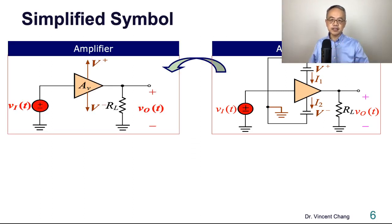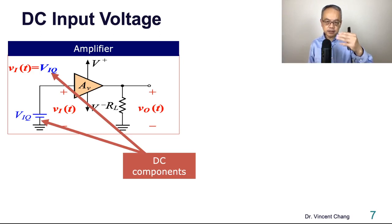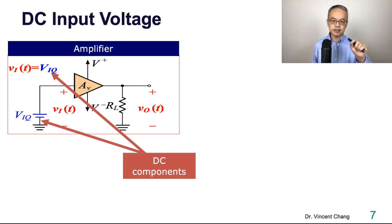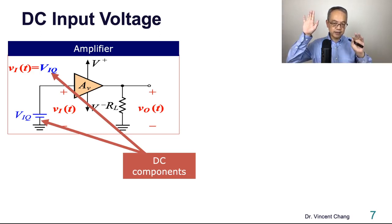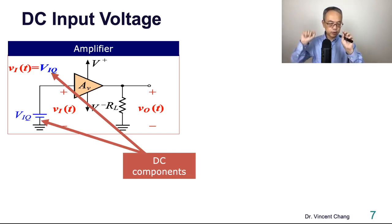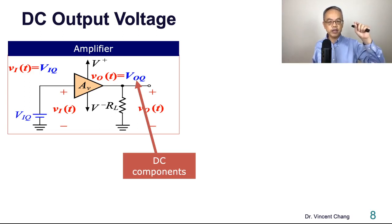On the left-hand side is the simplified symbol which removes the ground signal. Let's start with the DC input voltage. The symbol to represent the DC component is the capital variable V with a capital subscript I — capital V and capital subscript representing the DC component. The DC input will generate a DC output voltage VOQ.